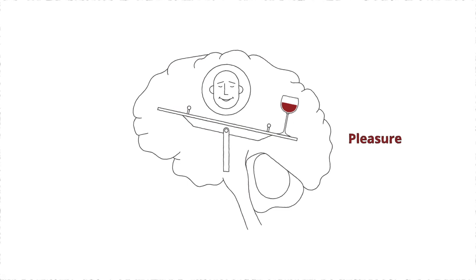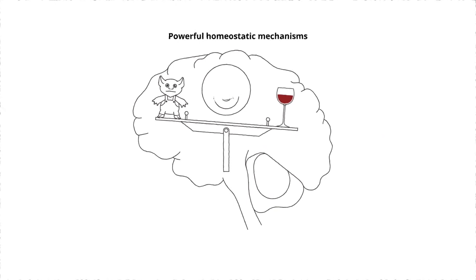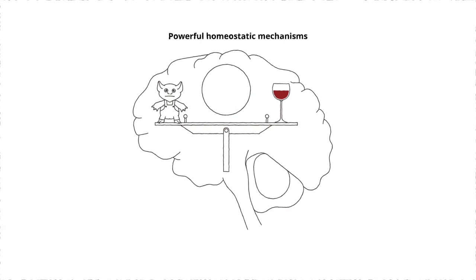But here's the important thing about the balance, it wants to remain level. It does not want to be tipped for very long to one side or another. Hence, every time the balance tips toward pleasure, powerful homeostatic mechanisms kick into action to bring it level again. This does not require conscious thought or an act of will. It just happens, like a reflex.